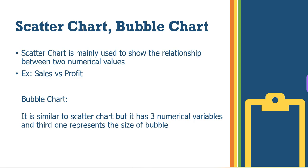We will also show you how to use three values in a chart — for example, Sales, Profit, and Discount. Note that a Scatter Chart is only for two numerical values, while a Bubble Chart can show three numerical values.